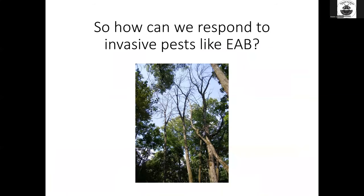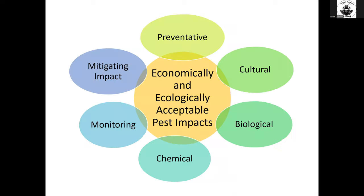With EAB likely to have devastating ecological and economic impacts as it spreads, how do we respond? The answer is to combine multiple different science-based strategies in situation-specific combinations through an integrated pest management framework. The central goal is to have economically and ecologically acceptable pest impacts. Today's talk will take a deeper dive into research results on monitoring, and on the conservation and future restoration of ash.